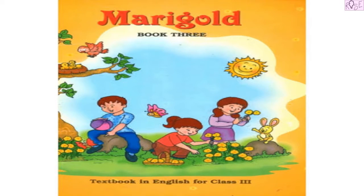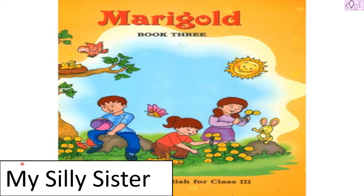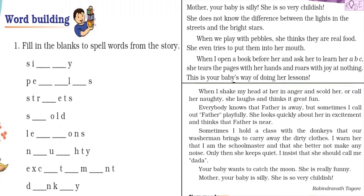Hello friends, how are you? Today we are going to do a fun activity taken from your book Marigold Class 3 and CRT, from the chapter 'My Silly Sister', page number 84. Open your book and turn to page number 84. The activity is to fill in the blanks to spell words from the story 'My Silly Sister'.